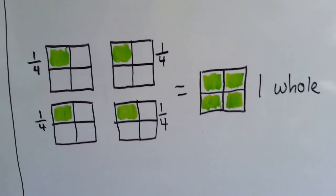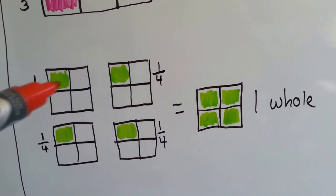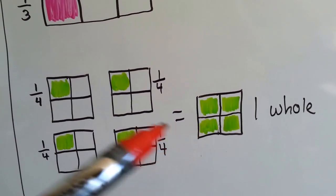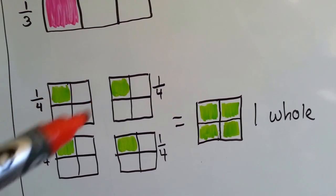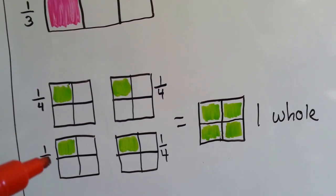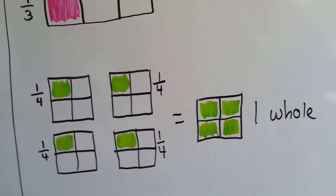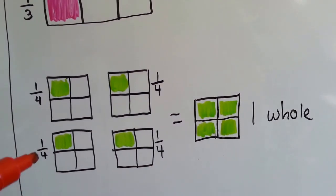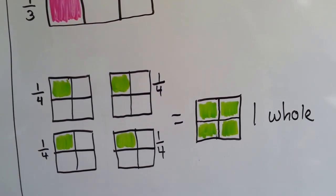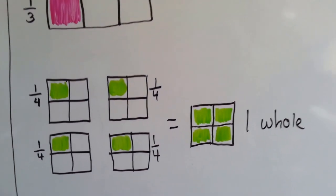Now look at this one. Same thing with one fourth. If we only fill in one of the four boxes, but we do it four times, it's the same thing as filling in four boxes. It's one whole. One fourth plus one fourth plus one fourth plus one fourth is equal to one whole. We'd have it split into four pieces, but then we would have all four of the pieces, because one plus one plus one plus one is equal to four.